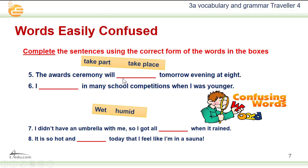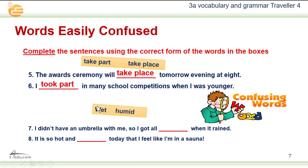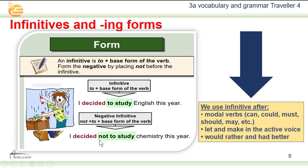Next we have 'take part' and 'take place.' Number five: The award ceremony will take place tomorrow. Number six: I took part in many school competitions when I was younger. Number seven uses 'wet' and 'humid': I didn't have an umbrella with me so I got wet when it rained. Number eight: It is so hot and humid today that I feel like I'm in a sauna.